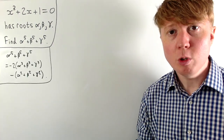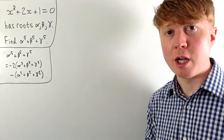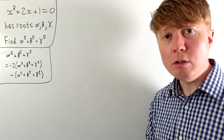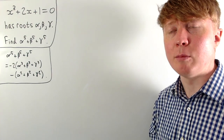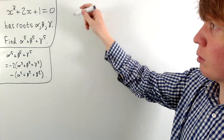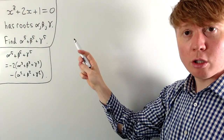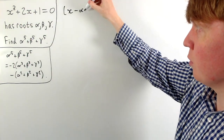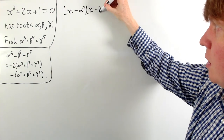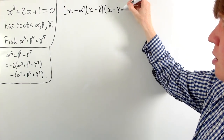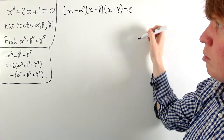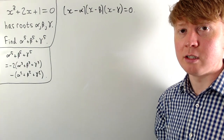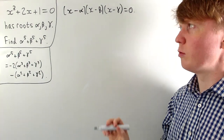Working toward the sum of squares, we use the fact that alpha, beta, and gamma are roots of the cubic. Since the leading coefficient is one, we can factorize as x minus alpha, times x minus beta, times x minus gamma, equals zero. Expanding these brackets gives us Vieta's formulas.